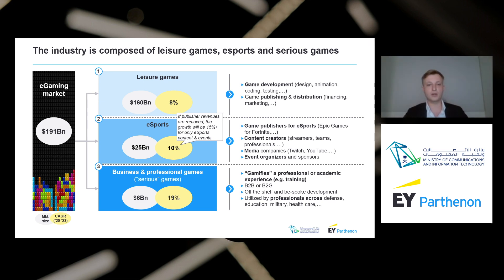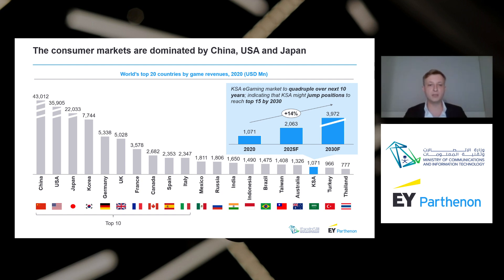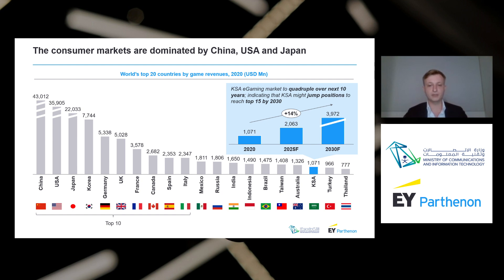Geographically, the biggest demand sources for e-gaming are China, USA, and Japan — the top three quite distinctly. Japan, which is third, is three times as big as Korea which is fourth. China, the US, and Japan form the epicenter of gaming consumption. Saudi Arabia is currently in the top 20 at around 1 billion US dollars, and it is estimated that the KSA will move towards the top 15 by 2030 due to increasing uptake of gaming consumption.